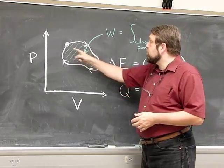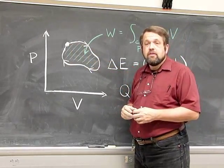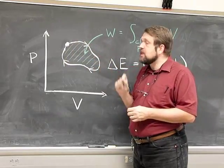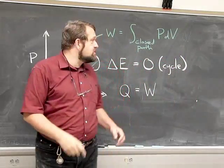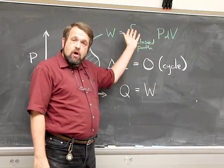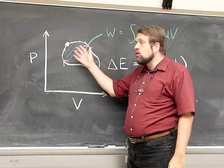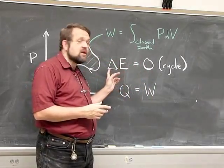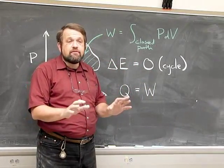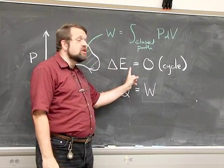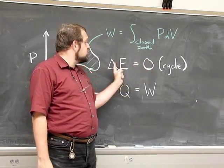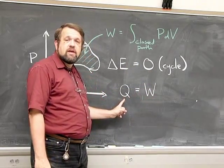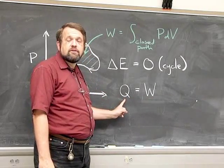We can also consider a cyclic process that begins and ends with the same state. The work done by the system during the cyclic process is the integral of P dV around the closed path, which equals the area enclosed by the path in the PV diagram. Because it's a cyclic process, there's no net change in the state of the system, and therefore the change in energy during the cycle is zero. If the change in energy is zero, the work done by the system must equal the net heat input during the cyclic process.